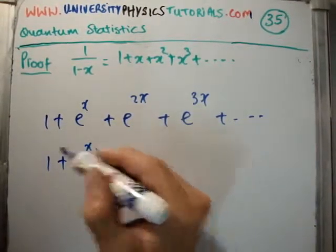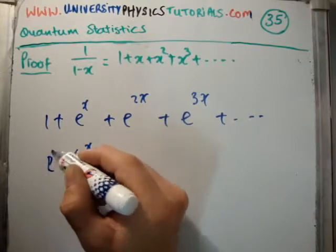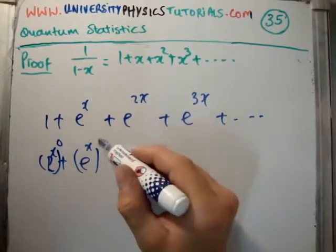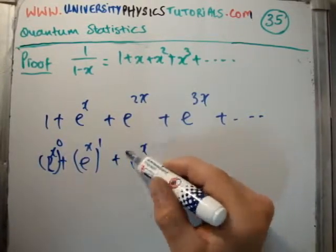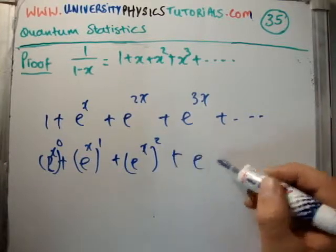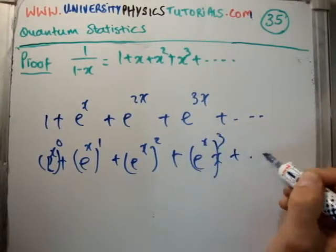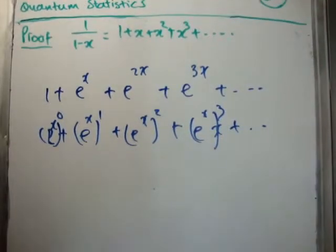Well, usually what we do is, that's e to the x to the power of 0, e to the x to the power of 1, e to the x to the power of 2, 3, and so on. So what we really have here is that we have,